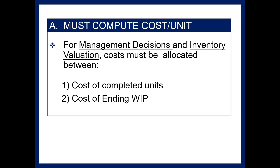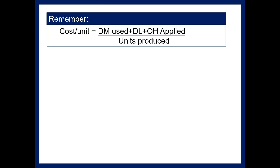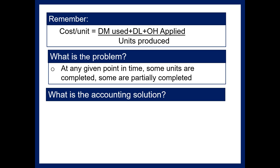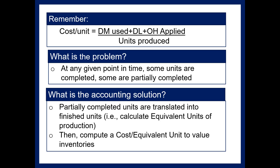You need to take the cost of any one time period and assign it to both the units completed and the ending work in process, since at any time you may have some partially completed inventory and some completed inventory. The cost per unit formula is: add up production costs — materials used, direct labor, and overhead applied — and divide by units produced. The problem is the denominator. At any given point in time, some units are completed and some are partially completed. For example, if Campbell's Soup manufactures 5,000 cans and 4,000 are finished while 1,000 are halfway finished, what is your denominator? The accounting solution is to translate finished units into equivalent units, then calculate a cost per equivalent unit to value inventories.